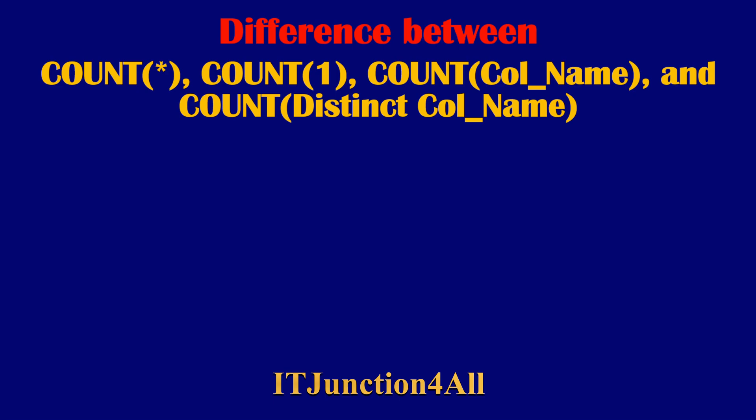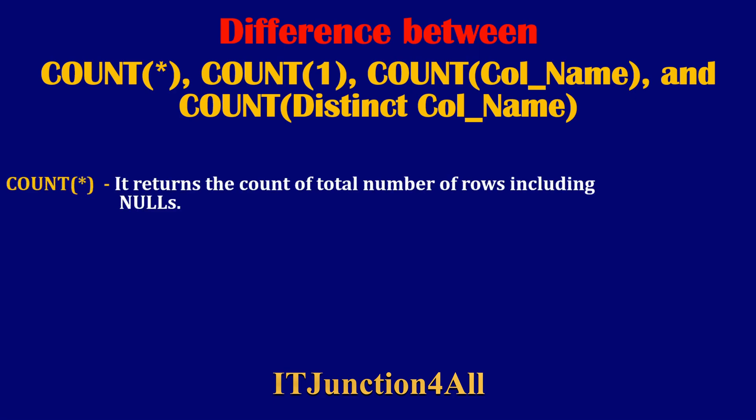So what is the first count function — COUNT(*)? As you must be aware, COUNT(*) gives the count of the total number of rows including nulls. If there are any null rows in a table, COUNT(*) will take those rows into consideration and give the count of total rows including nulls.